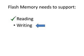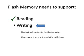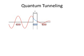So how is data written to flash memory? Well, there's no electrical contact to the floating gate, so that approach won't work. Somehow charges have to be moved through the oxide layer. One approach is to use quantum tunneling. If we have a rectangular potential barrier where the barrier energy is higher than the particle's energy, then classically the particles can't make it through.